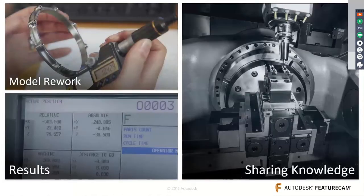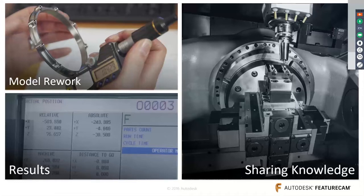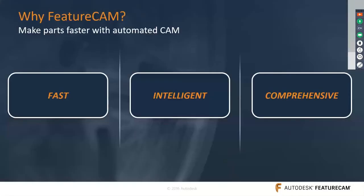Model rework and errors in part programming create additional work. Manual programming or your existing CAM software may not produce the results you need. The inability to capture and reuse programming knowledge between jobs creates inconsistency — for example, if you have an NC program made for one controller and need to shift that job to another controller, you have to rewrite the whole program. FeatureCAM can handle all of these things — it's fast, intelligent, and comprehensive.